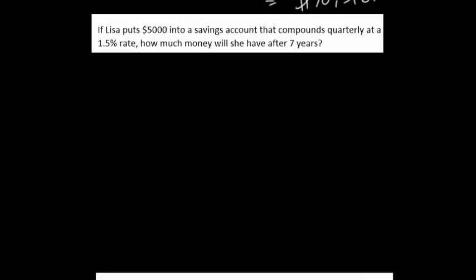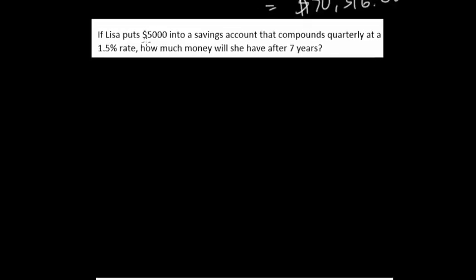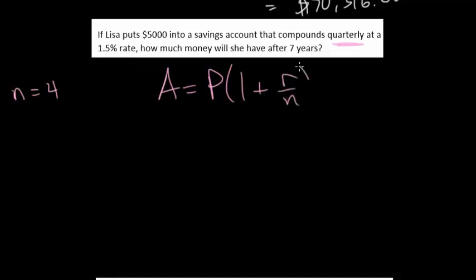This one, we have Lisa putting $5,000 into a savings account. And this time, it's going to compound quarterly. So our N value is essentially going to be 4 here. Let me just rewrite that equation so that we have it and are able to work with it.